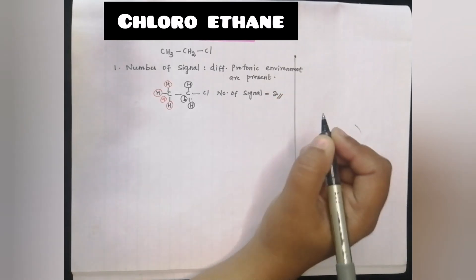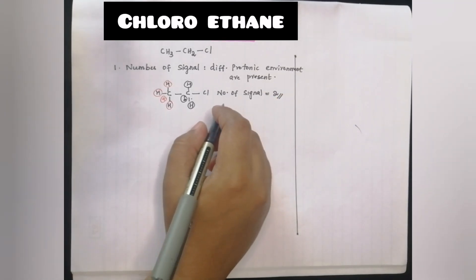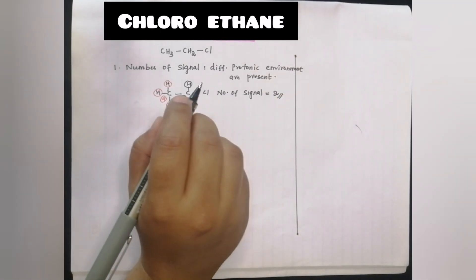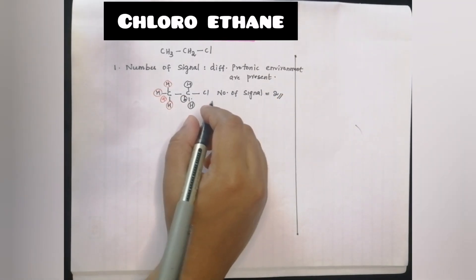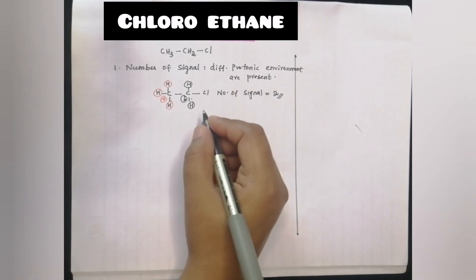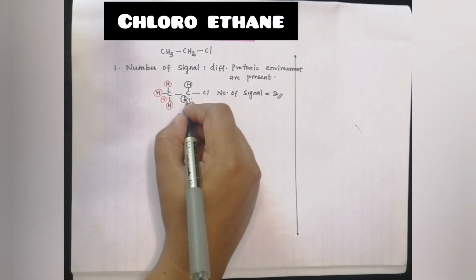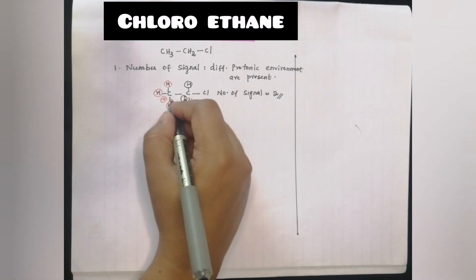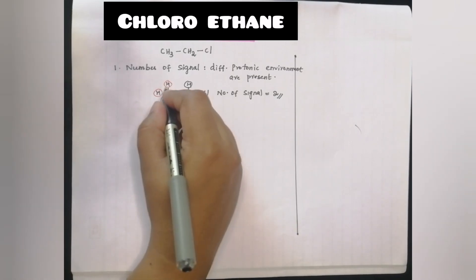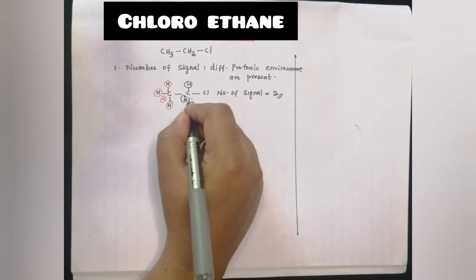This is the first step — how many signals are there? Two different kinds of protons. The first set is 3 hydrogens and the second set is 2 hydrogens.